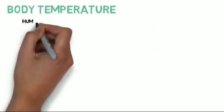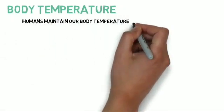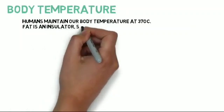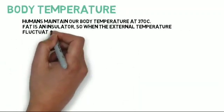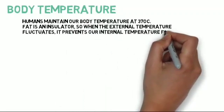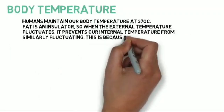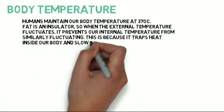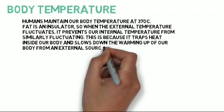Humans maintain our body temperature at 37 degrees centigrade. Fat is an insulator, so when the external temperature fluctuates, it prevents our internal temperature from similarly fluctuating. This is because it traps heat inside our body and slows down the warming up of our body from an external source.